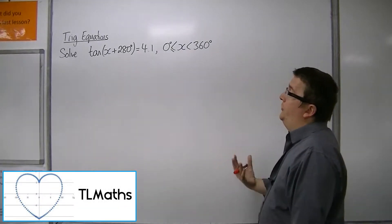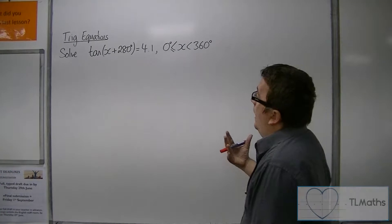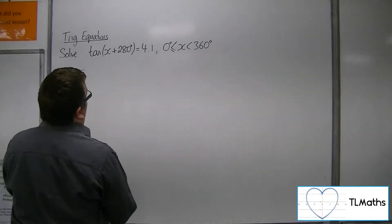OK, so let's say we want to solve tan of x plus 280 equals 4.1 between 0 and 360 degrees.